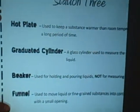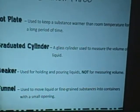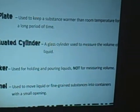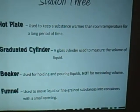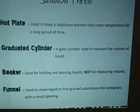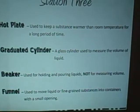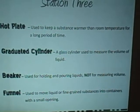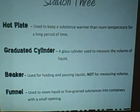Station three. A hot plate is used to keep a substance warmer than room temperature for a long period of time. A graduated cylinder is a glass cylinder used to measure the volume of liquid. A beaker is used for holding and pouring liquids, not for measuring volume. A funnel is used to move liquid or fine-grained substances into containers with a small opening.